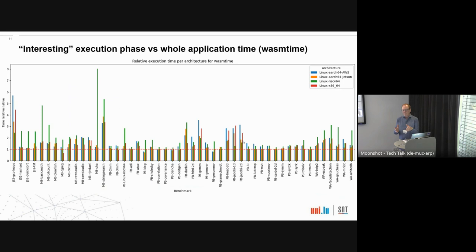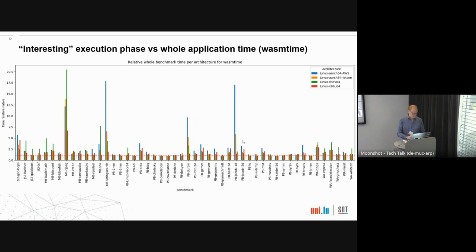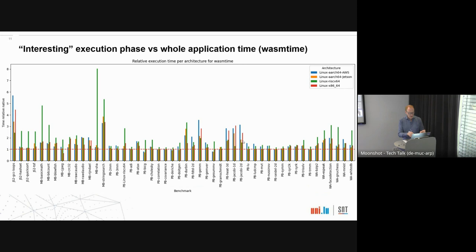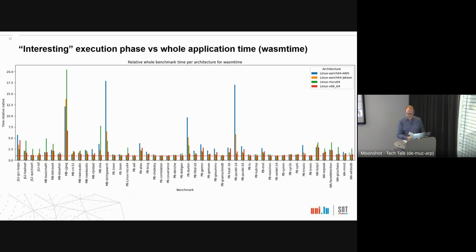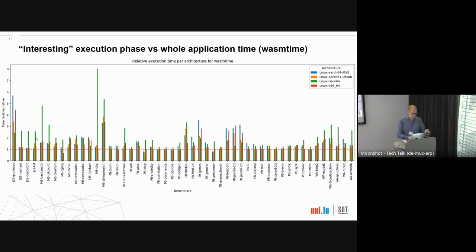What impact does studying just the interesting part of the program have compared to the whole application including loading time and tear-down? When we look at just the interesting part versus the whole application, you can infer more or less the same things, but it's more visible when we look at only the interesting part — particularly for short-running programs. For whole applications like MNIST, the interesting part dominates, so it looks similar. But for something like CG JPEG, the initialization part dominates and is not visible when measuring only the whole application.